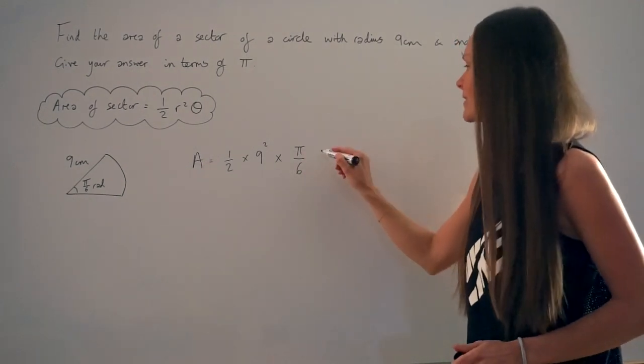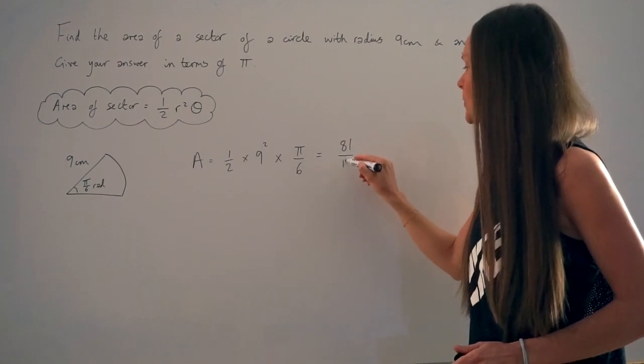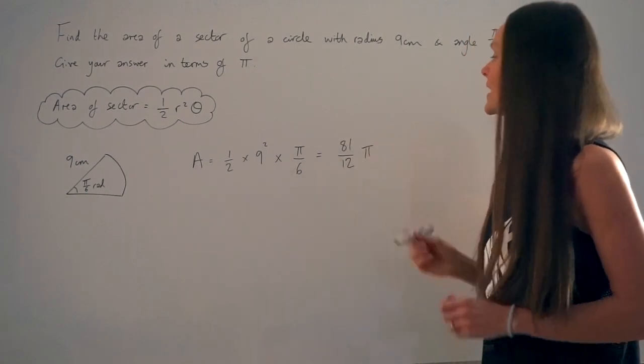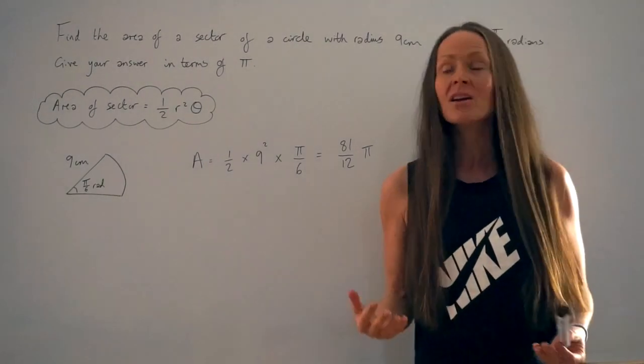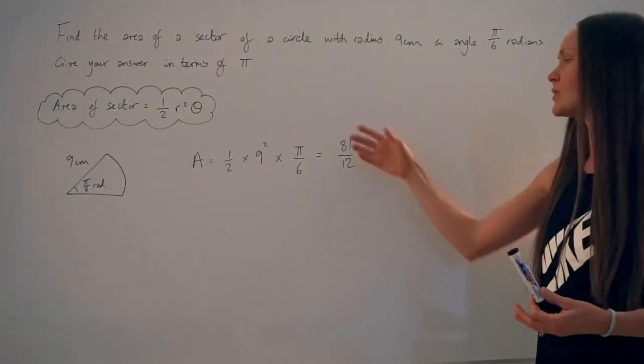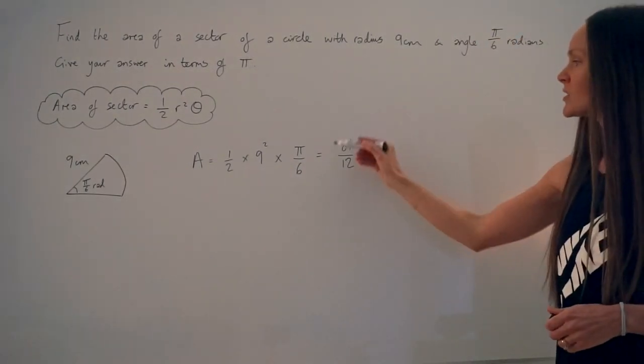So when you calculate this you should find that it's 81 over 12 pi. It does say in the question to give your answer in terms of pi. So you don't want to put this in your calculator and round to one decimal place. You must leave it in terms of pi.